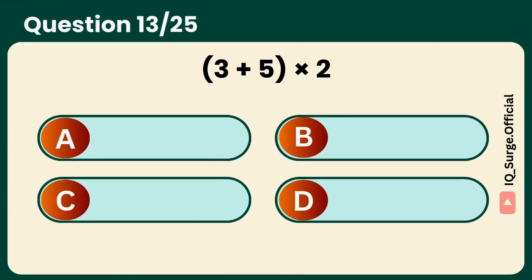What is 3 plus 5 times 2? Answer: 16. Simple, but easy to slip up.